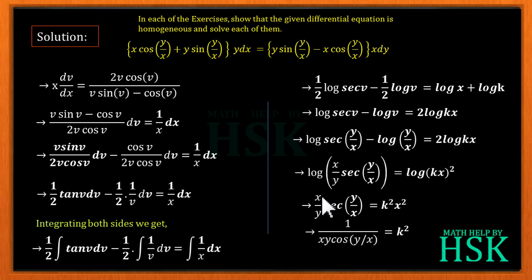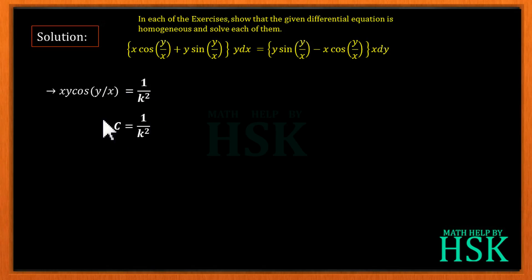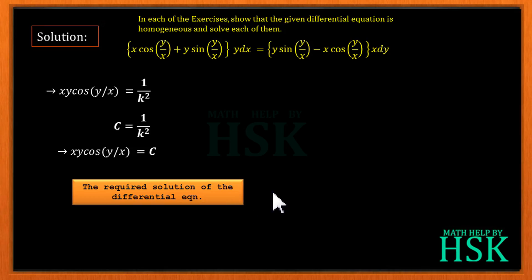Cancelling x from both sides and writing sec as 1/cos: 1/(y·cos(y/x)) = k². Taking the reciprocal of both sides gives x·y·cos(y/x) = 1/k². Replacing 1/k² with the constant c, we obtain x·y·cos(y/x) = c, which is the required solution of the differential equation.